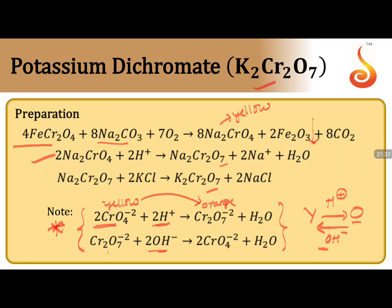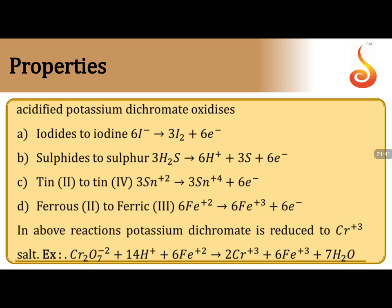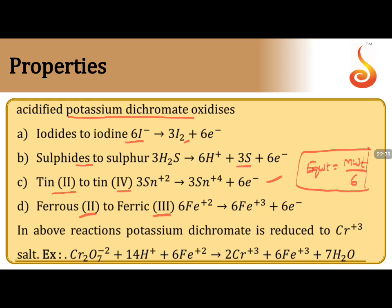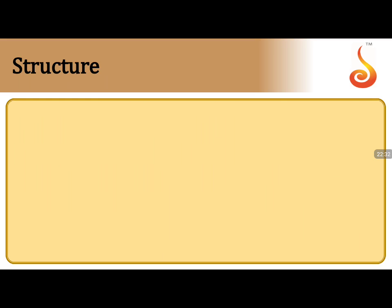Acidifying sodium chromate gives sodium dichromate, and further treatment produces K₂Cr₂O₇ by metal displacement. The chromate-dichromate interconversion is an equilibrium. K₂Cr₂O₇ acts as an oxidizing agent only in acid medium; in basic medium it converts to K₂CrO₄ with no change in oxidation state. Common oxidizing reactions: iodides → iodine; sulfides → sulfur; Sn²⁺ → Sn⁴⁺; Fe²⁺ → Fe³⁺. The n-factor of K₂Cr₂O₇ is 6; equivalent weight = molecular weight/6.